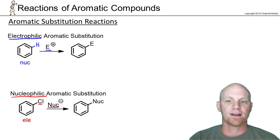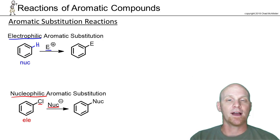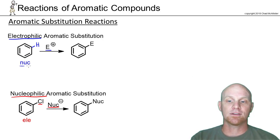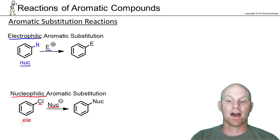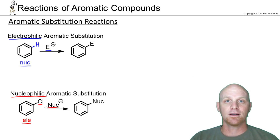Based on what you're reacting benzene with determines its role. In electrophilic aromatic substitution, if we're reacting benzene with an electrophile, that means benzene is going to be a nucleophile. In nucleophilic aromatic substitution, if we're reacting benzene with a nucleophile, that means benzene is going to be an electrophile.